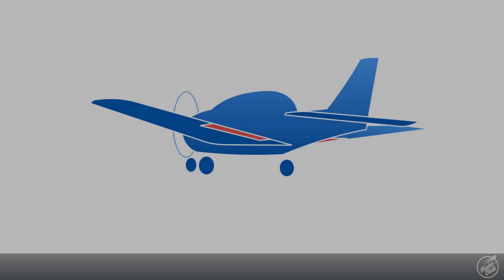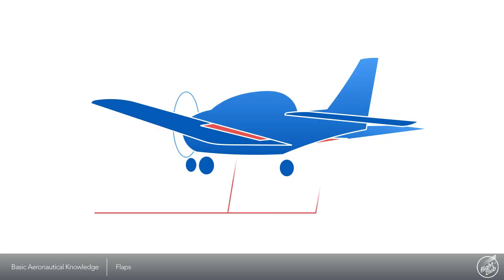Flaps are secondary control surfaces mounted on the trailing edge of the wings. They are primarily used to accommodate safe, slow flight and to shorten the takeoff and landing distances on the ground.